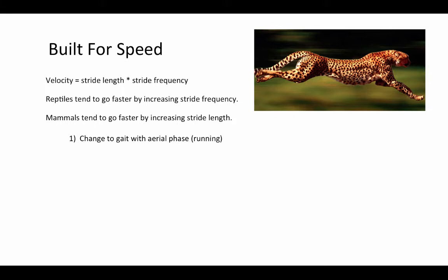Why does the aerial phase increase stride length? Because when you always have at least one foot in contact with the ground, you're limited in how far forward you can go by the length of your limb. When you incorporate an aerial phase — where you're leaving the ground and propelling yourself forward — you're no longer limited by limb length in terms of how far you can go in a stride. Animals also have a tendency to increase the length of the limbs and to increase the number of limb segments.